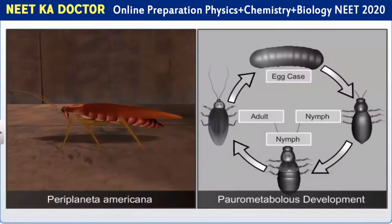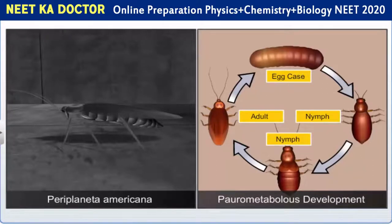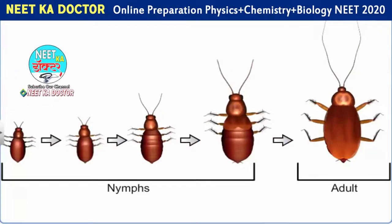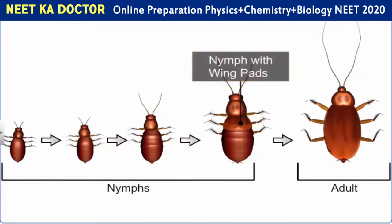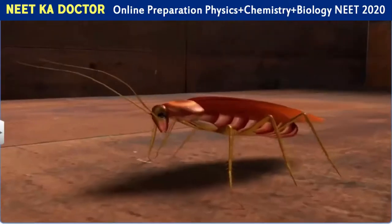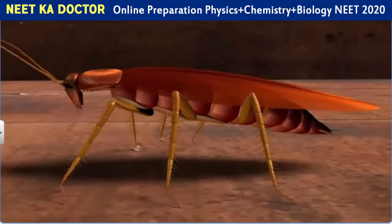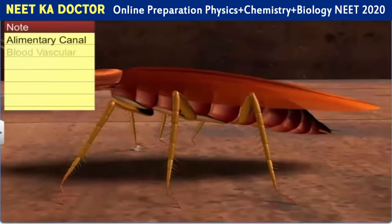In Periplaneta americana, the development of the insect is paurometabolous, which means that development takes place through the nymphal stage. A nymph looks quite similar to an adult, and it moults around 13 times before it turns into an adult. Though the second-last nymphal stage has wing pads, only adult cockroaches have wings. We've just studied the anatomical features of a cockroach, such as the alimentary canal and the blood vascular, excretory, nervous and reproductive systems.